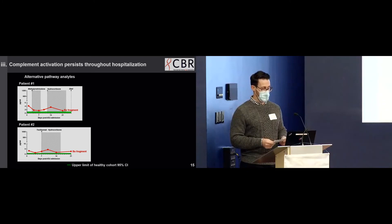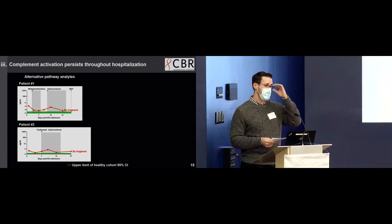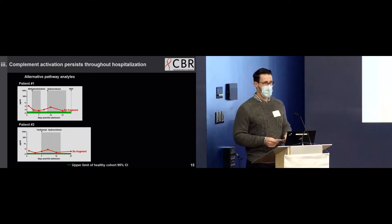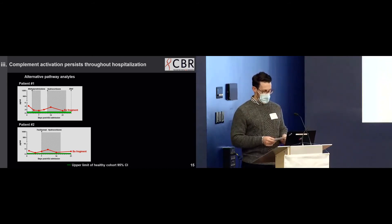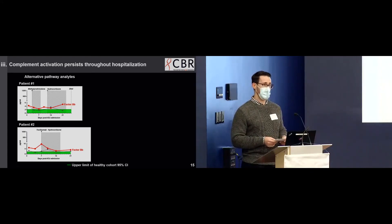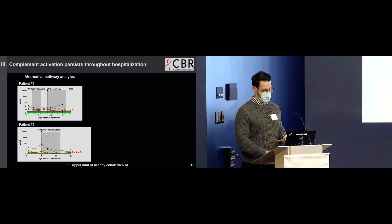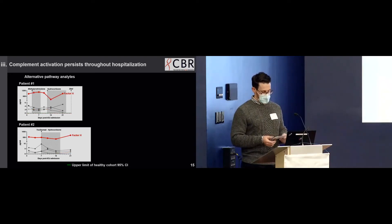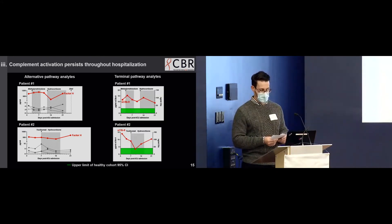We examined complement activation longitudinally in a subset of patients. We found that the alternative and terminal pathway markers remained elevated over the entire 21-day study period, well above the upper limit of the 95% confidence interval of the control cohort. Activation marker Ba remained chronically elevated, Bb remained chronically elevated, and factor D remained reasonably stable. We saw a similar trend with the terminal pathway analytes SC5B9 and C5A.